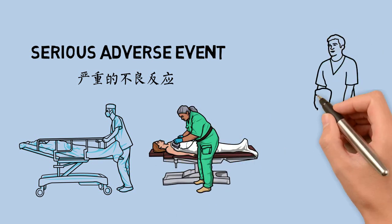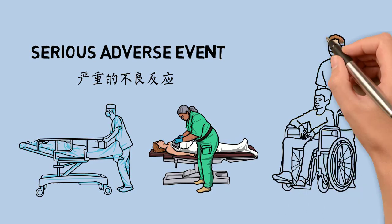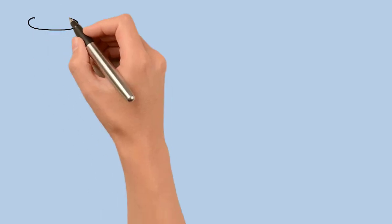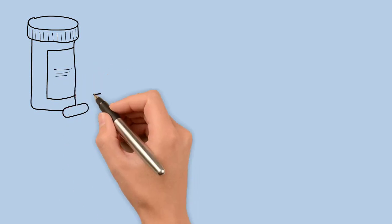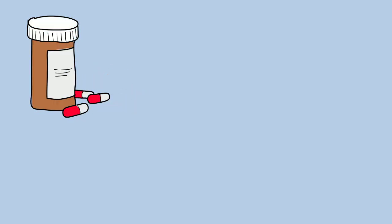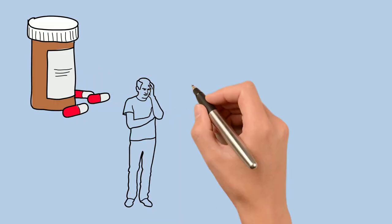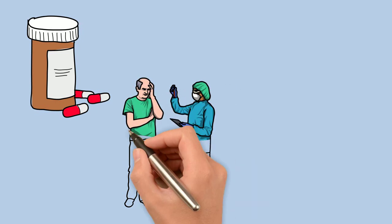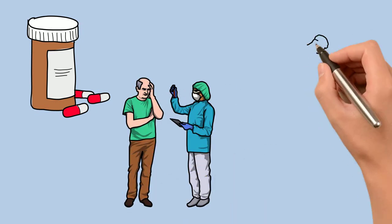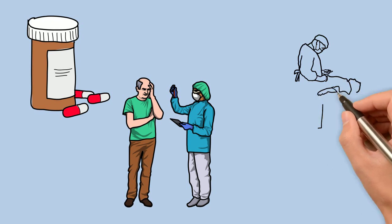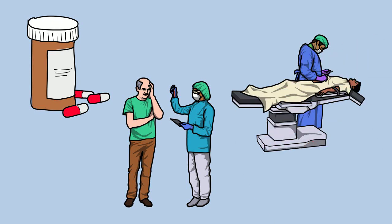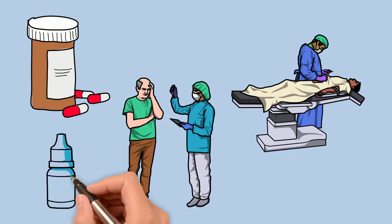The results of trials are often included in the labeling of the medication to provide information both for patients and the prescribing physicians. The term life-threatening in the context of a serious adverse event refers to an event in which the patient was at risk of death at the time of the event. It does not refer to an event which hypothetically might have caused death if it were more severe. This is the basic knowledge of pharmacology.